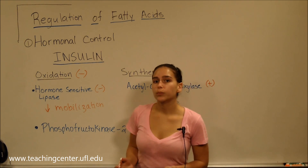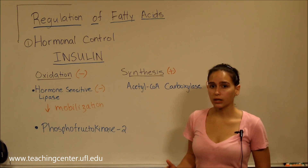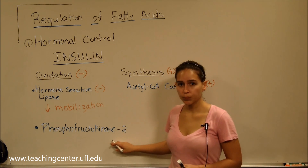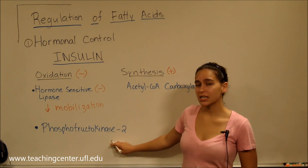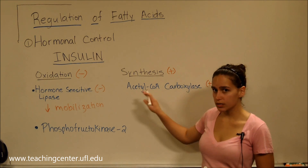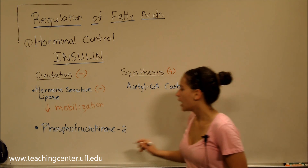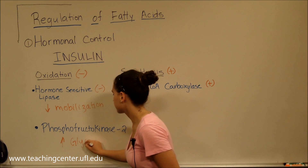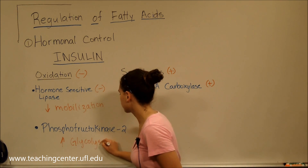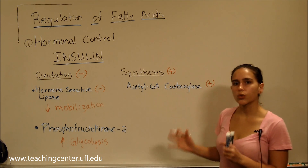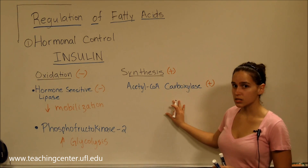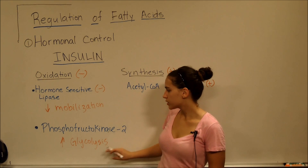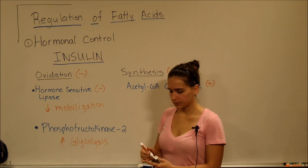As we know from glycolysis and gluconeogenesis regulation, insulin activates phosphofructokinase 2 via the bifunctional enzyme by dephosphorylation, which increases the rate of glycolysis. So overall, insulin promotes making and storing fats, and increases glycolysis for glucose breakdown.